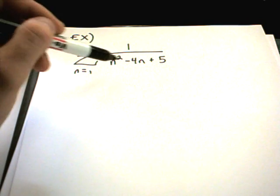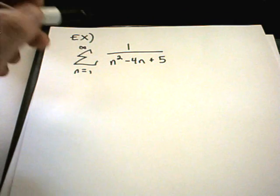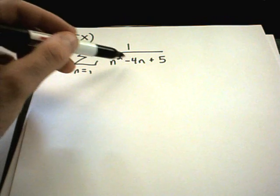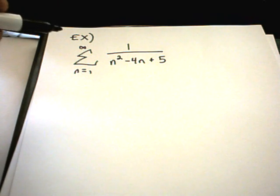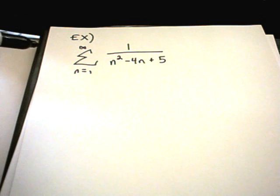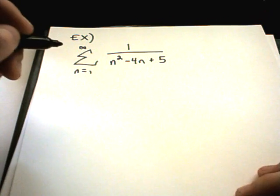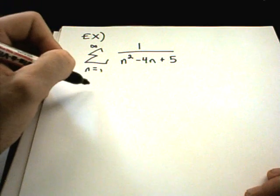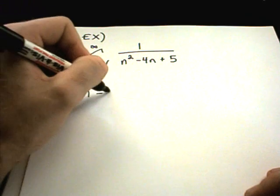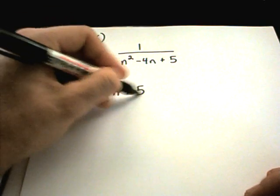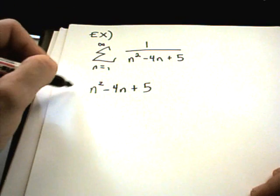You know, maybe you could factor this thing on the bottom. But I think you'll find if you try to factor n squared minus 4n plus 5, it doesn't really factor very well. I suppose you could always use the quadratic formula and go about it that way. But this is just one of those kind of tricky problems where there's an easier way to go about it. So I'm going to rewrite n squared minus 4n plus 5. I'm going to do a little completing the square on this.